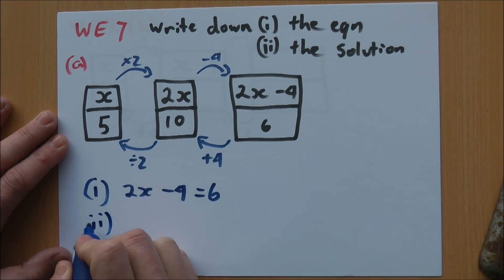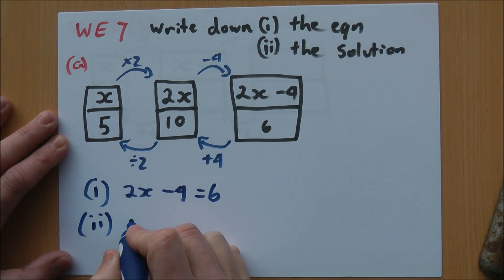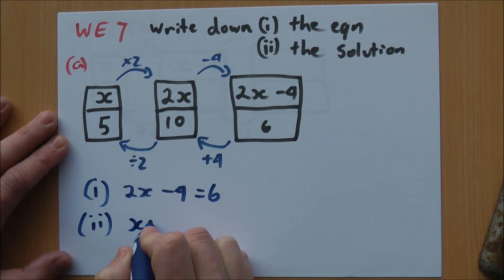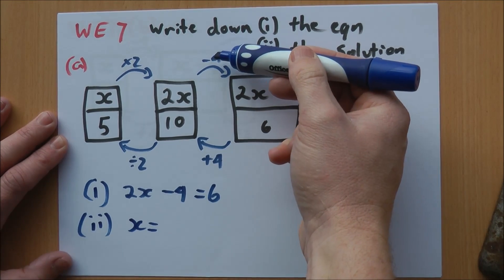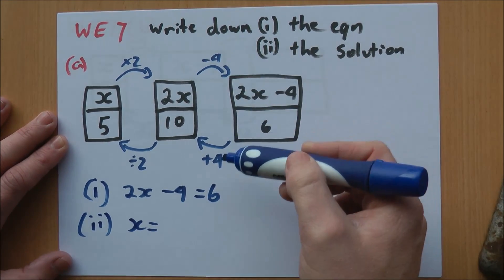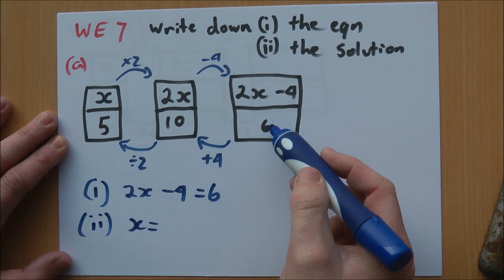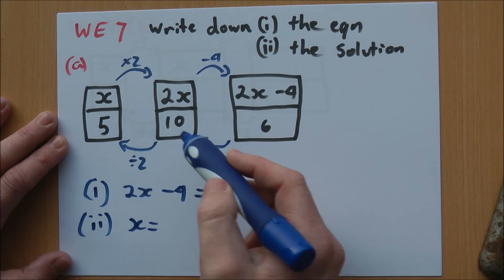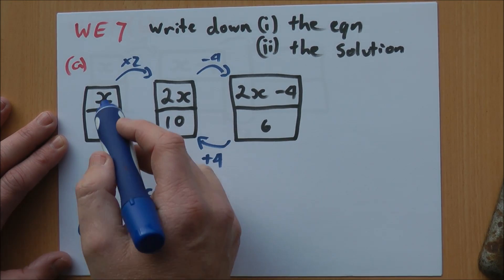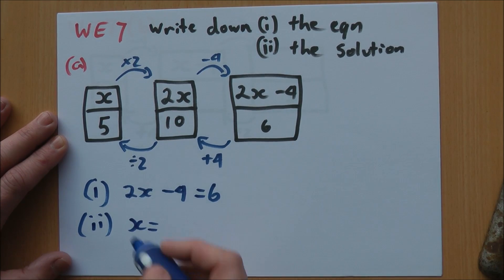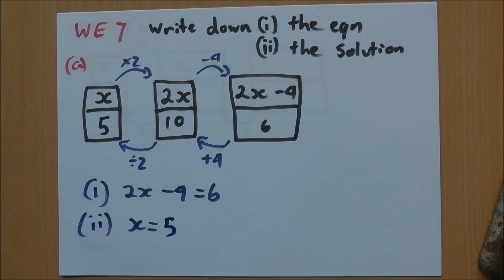Part 2, we need to work out what our solution is — x equals what. You can see I've got my operation up here: minus 4, inverse is plus 4; times 2, inverse is divide by 2. 6 plus 4 is 10. 10 divided by 2 is 5, because that's the inverse of what we're doing on the top. So x equals 5, and we're finished.